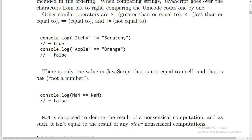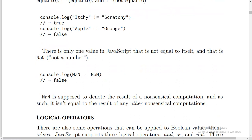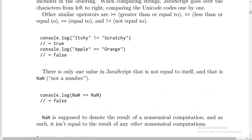Console.log(NaN == NaN). It's false. NaN is supposed to denote the result of a nonsensical computation, and as such, it isn't equal to the result of any other nonsensical computations.